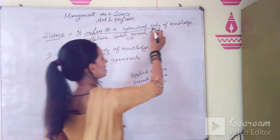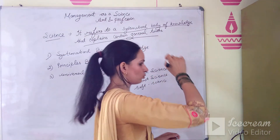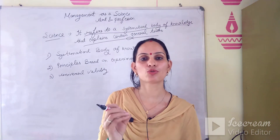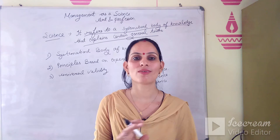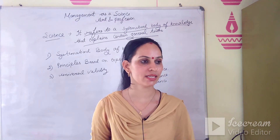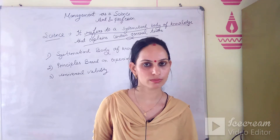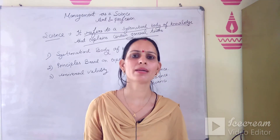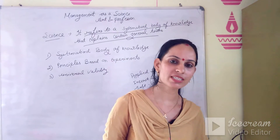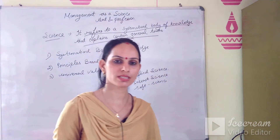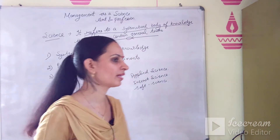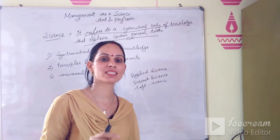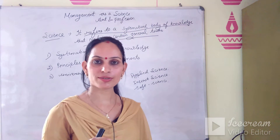Science refers to a systematized body of knowledge that explains certain general truths. In science, there is systematic knowledge that tells us certain general truths that cannot be questioned. For example, if science says that the sun is a star, that is correct. If it says carbon dioxide is made from carbon and oxygen, that will always hold true — you can go anywhere in the world and these general truths will remain valid.